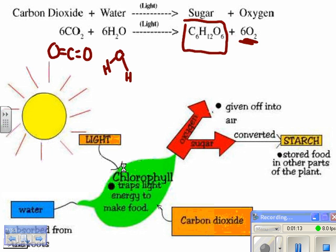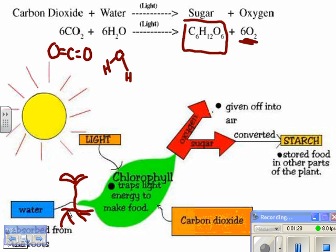Here it is in picture form. Sunlight hits the leaves, where chlorophyll — a pigment — traps light energy to make food. Water comes in from the roots, and carbon dioxide goes in through the leaves through little holes called stomata. The plant then makes oxygen as a waste product and makes sugar, which can be used right away.